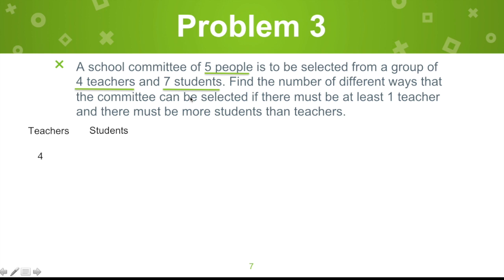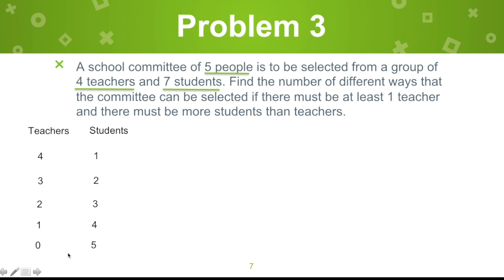Let's list the possibilities. We have 4 teachers and 1 student (total 5), 3 teachers and 2 students, 2 teachers and 3 students, 1 teacher and 4 students. We don't need 5 and 0 because there are only 4 teachers. What about 0 teachers and 5 students? That's also a possibility.